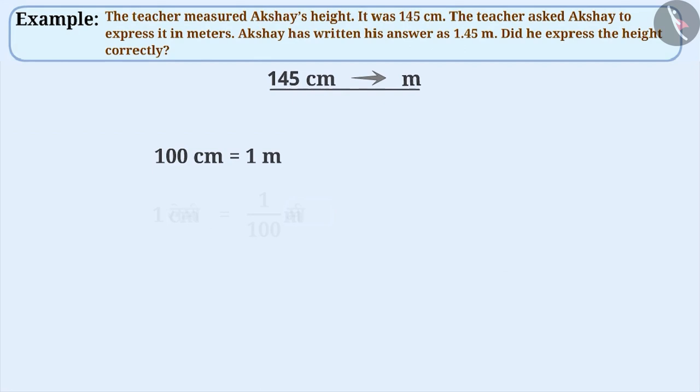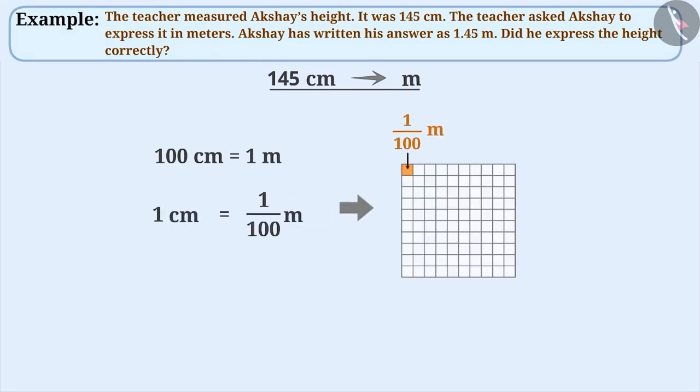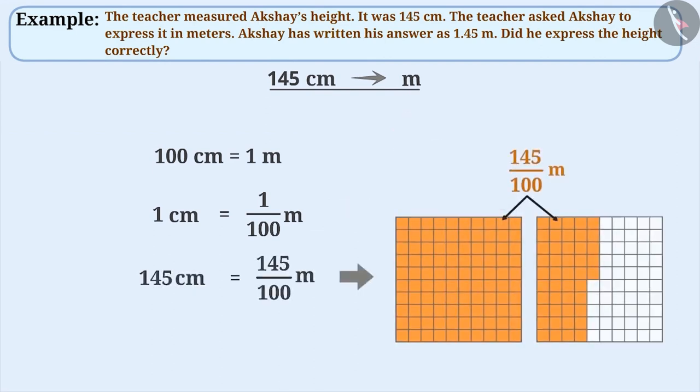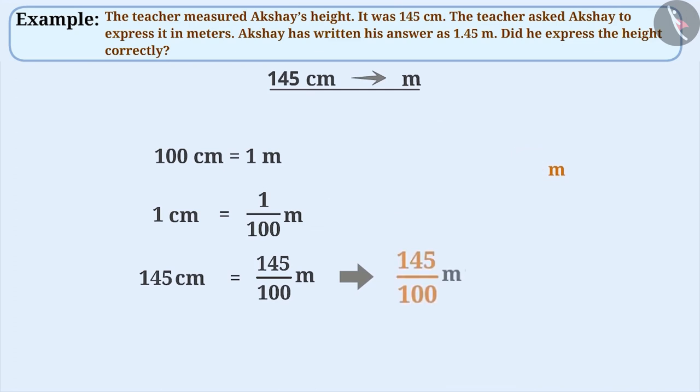By looking at this, we can say that 1 centimeter is equal to 1 by 100 meters. Therefore, 145 centimeters is equal to 145 hundredths meters.